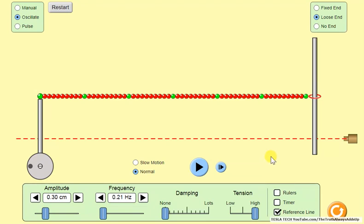And this is related directly to Tesla's wireless transmission system. This is a quarter wavelength.